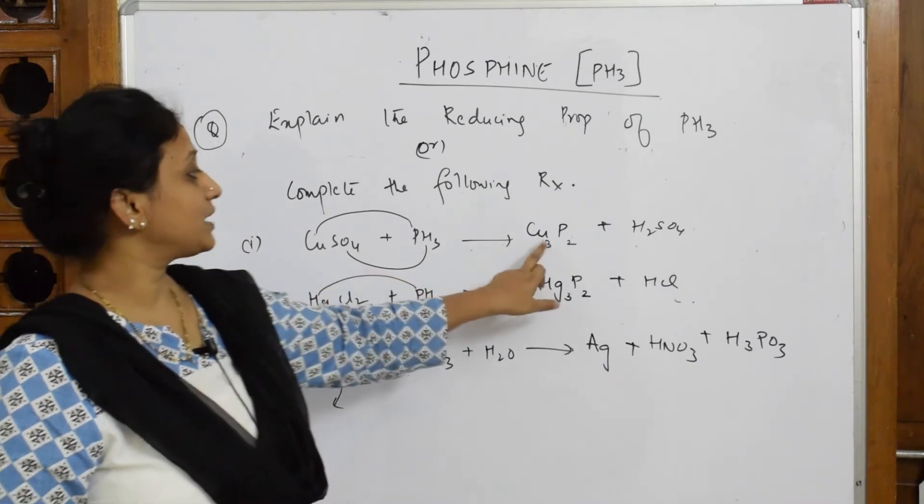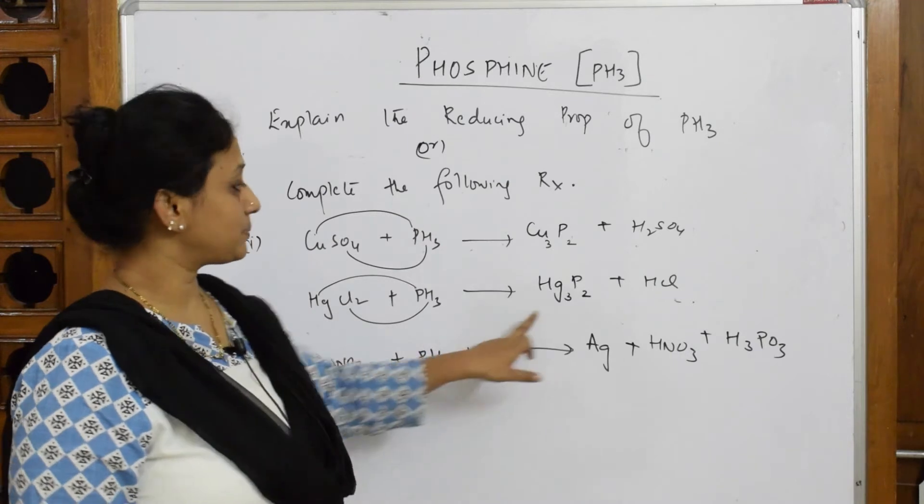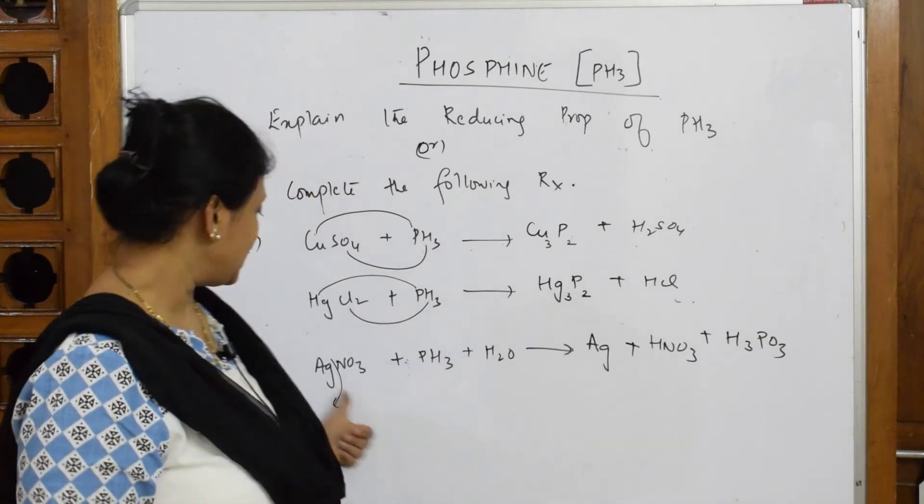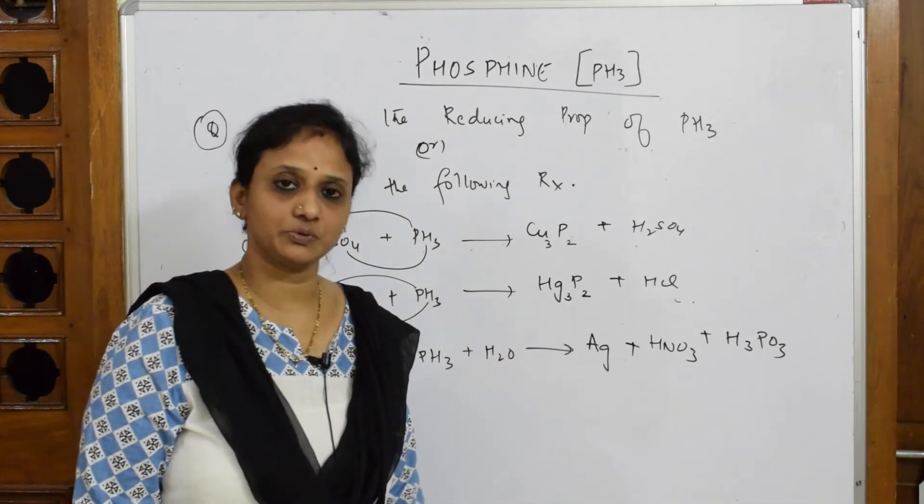Copper sulfate, if you see, prepares the corresponding copper phosphide. Mercuric chloride prepares the corresponding phosphide. When you see silver nitrate, try to precipitate out silver and the leftover is nitric acid and H3PO3.